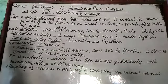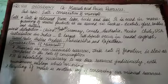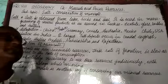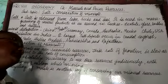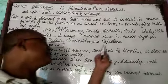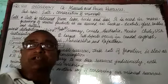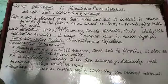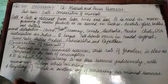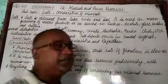The major salt-producing states in India are Gujarat, Tamil Nadu, and Maharashtra. These states produce salt in abundance because they are very close to the ocean. Apart from this, Rajasthan is also a significant salt producer even though it has no connection with the sea or ocean.